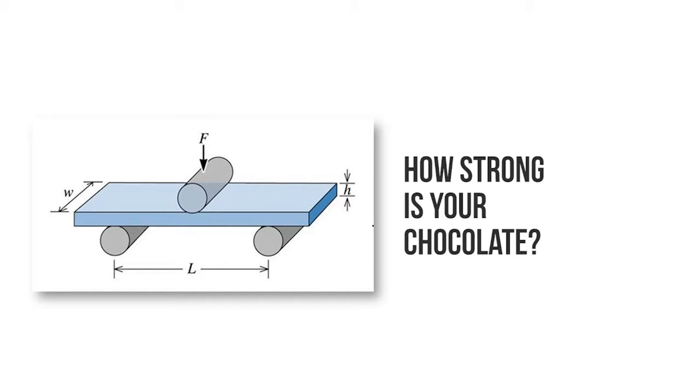The objective of this lesson is to demonstrate how material properties, such as microstructure, can influence the strength of a material.